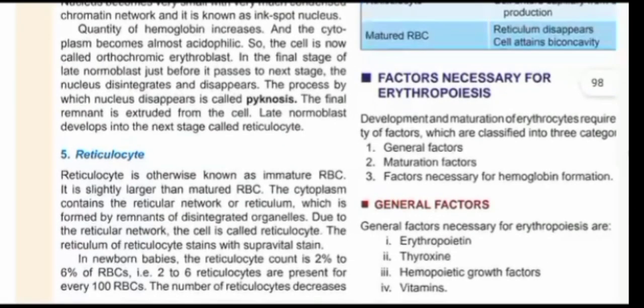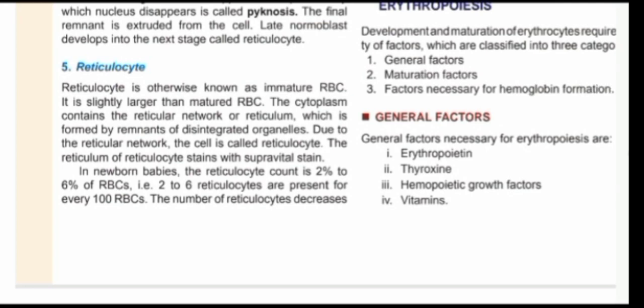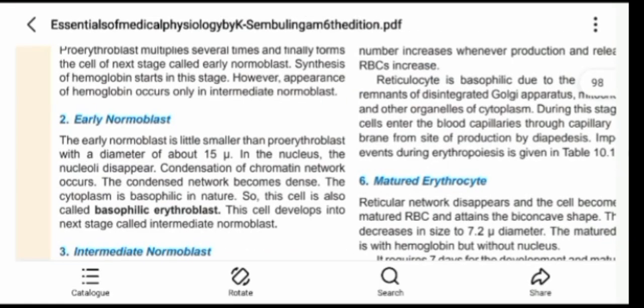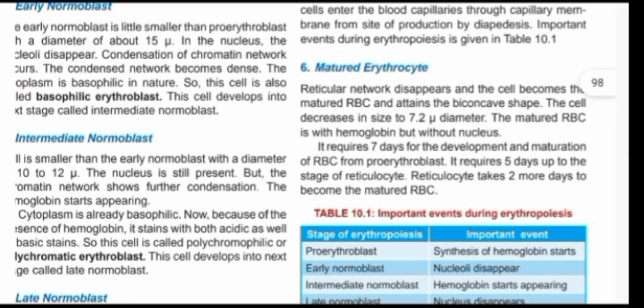Then we have the reticulocyte stage, also known as the immature blood cell. It is slightly larger than the mature blood cell but more similar to the mature blood cell than the other stages of erythropoiesis. The cytoplasm contains a reticular network of reticulin, which is the typical feature that distinguishes the reticulocyte from other stages. When you come to the mature erythrocyte, the reticulin is no longer present. The cell decreases in size to the normal diameter of 7.2 microns. The mature red blood cell has hemoglobin but no nucleus, and it attains a biconcave shape.